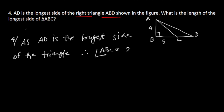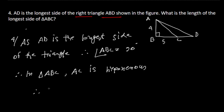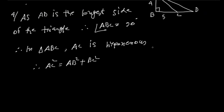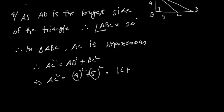Angle ABC equals 90 degrees. In triangle ABC, AC is the hypotenuse. AC squared equals AB squared plus BC squared, applying the Pythagorean theorem: 4 squared plus 5 squared equals 16 plus 25 equals... the answer is AC equals root over 36 equals 6.